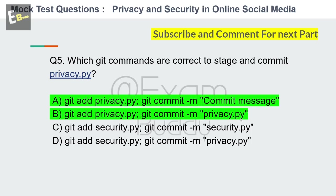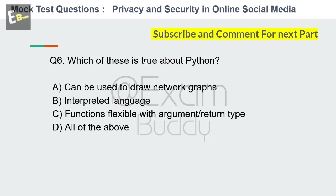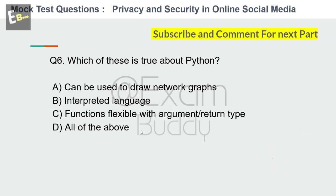Question 6: Which of these is true about Python? Options: Can be used to draw network graphs, interpreted language, functions flexible with argument return type, all of the above. The answer is D: all of the above.